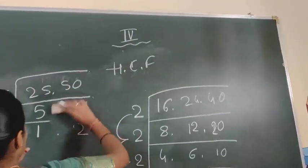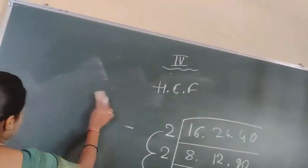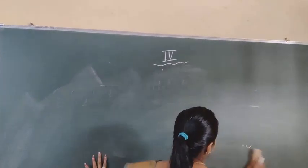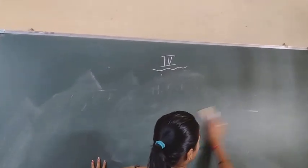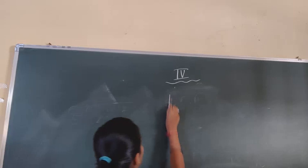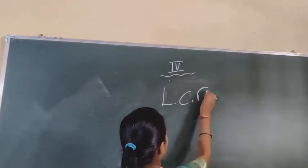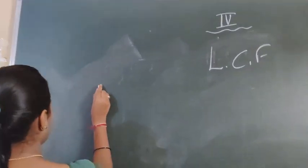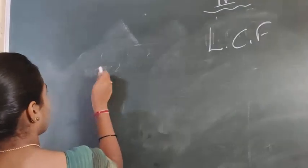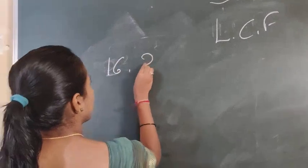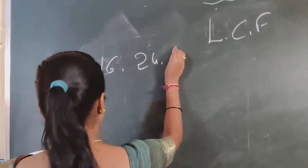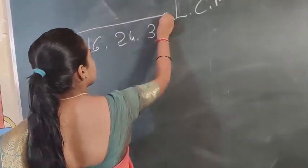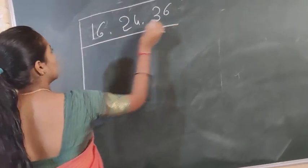Next, LCM. This is the least common multiple. We have to find out the least common factor. Least common factor: 16, 24, and 36. These are also multiplied with 2.